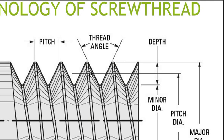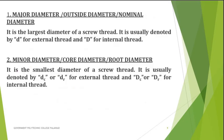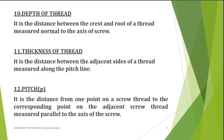Another term is pitch. The pitch of a screw thread is the distance from one point on a screw thread to the corresponding point on the next screw thread — for example, from the crest of one thread to the crest of the next, or from one root to the next root. This distance is equal to pitch, measured parallel to the axis of the screw.